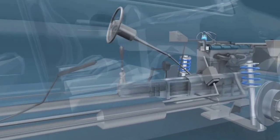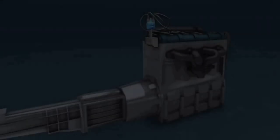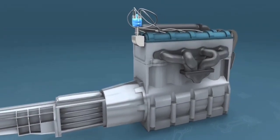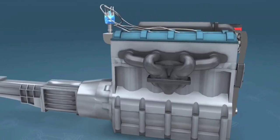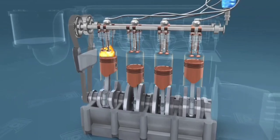The thermodynamic analysis of the actual four-stroke and two-stroke cycles is not a simple task. However, the analysis can be simplified significantly if air standard assumptions are utilized. The resulting cycle, which closely resembles the actual operating conditions, is the Otto cycle.